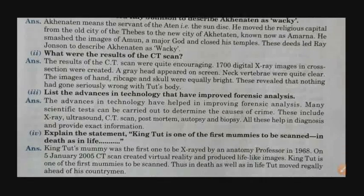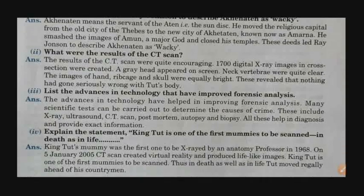What were the results of the CT scan? The results were quite encouraging. 1,700 digital X-ray images in cross-section were created. A grey head appeared on the screen and neck vertebrae were quite clear. The images of the hand, ribcage, and skull were equally clear. These revealed that nothing had gone seriously wrong with Tut's body — it was quite in fine shape and size even after the damage caused by archaeologist Howard Carter.